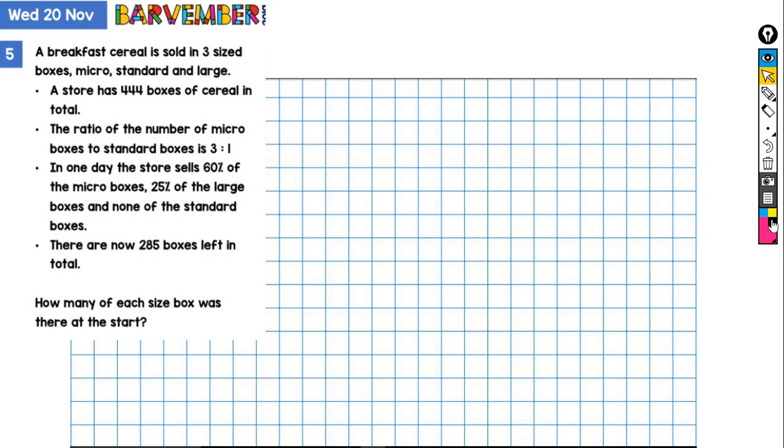Now, as I said at the beginning, when I first saw this, I kept thinking, is there some information missing? Because we were told the ratio of micro to standard, but there was nothing to relate that information to the size of the large boxes or the ratio of the large boxes. So, I just thought I'd better start drawing it out to see if that did show me anything, which it did. So, let's have a look. Let's see how far I got.